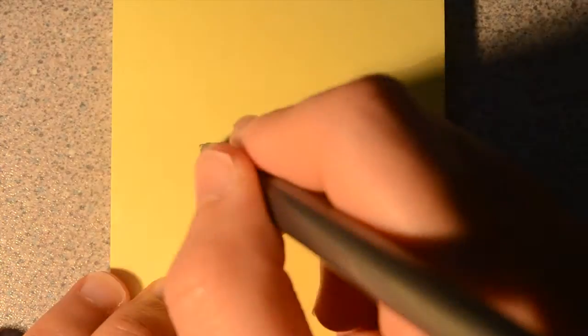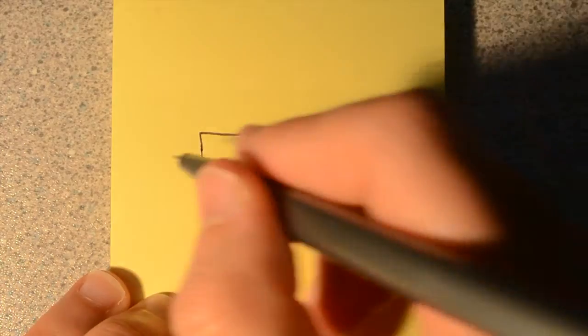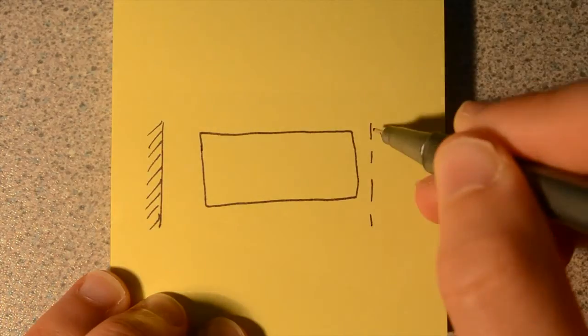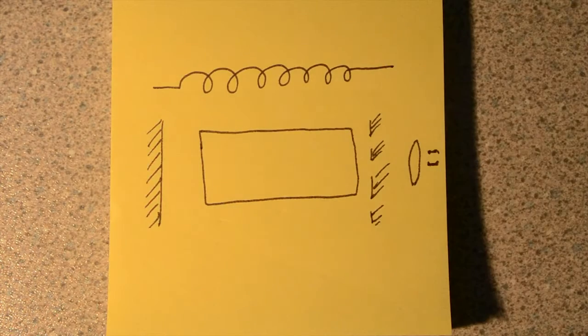A standard laser consists of a gain medium, a fully reflecting mirror, a partially reflecting mirror, a lens array, and a flash tube.